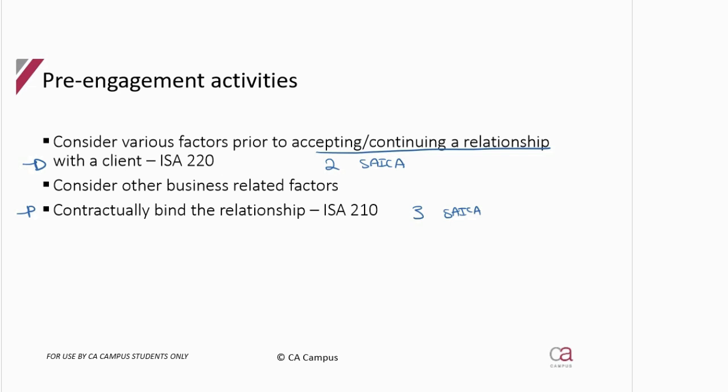We are going to first focus on ISA 220, which gives us the steps the audit partner must consider when deciding whether to accept this client. Then we'll move on to the other business factors, and finally, once they agree to work together, they will sign a contract covering all the details of this relationship.